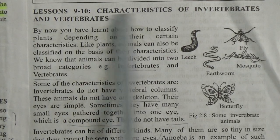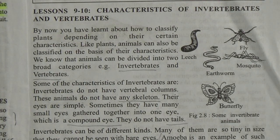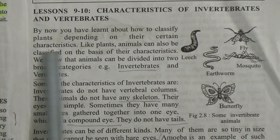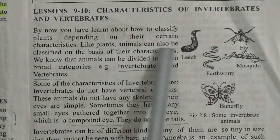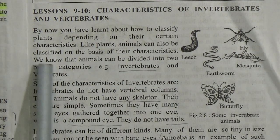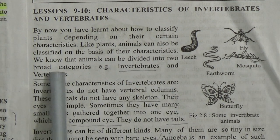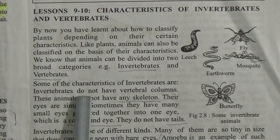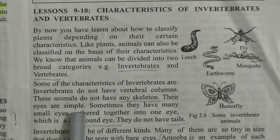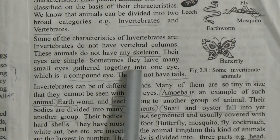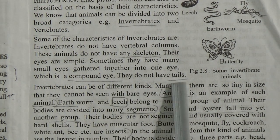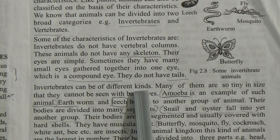Lessons 9 to 10: Characteristics of Invertebrates and Vertebrates. Just as plants can be classified depending on certain characteristics, animals can also be classified on the basis of their characteristics. Animals are divided into two broad categories: invertebrates and vertebrates. Some characteristics of invertebrates are: they do not have vertebral columns, they have no skeleton, their eyes are simple — sometimes they have many small eyes gathered together into one compound eye — and they do not have tails.